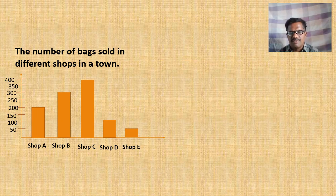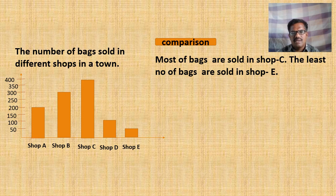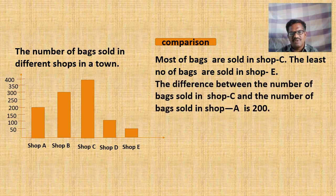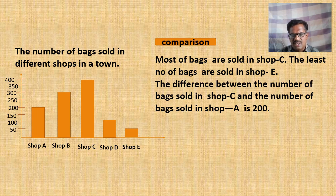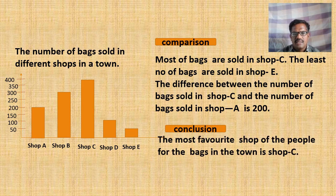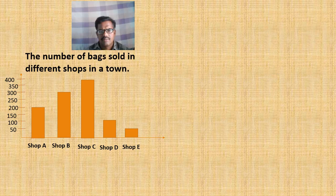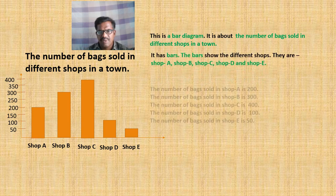Then the children may come out with another paragraph by taking comparisons among the values — giving the least number and the highest number. For example: 'Most of the bags are sold in Shop C. The least number of bags are sold in Shop E.' They can also write a paragraph taking differences among the values: 'The difference between the number of bags sold in Shop C and the number of bags sold in Shop E is 200.' Taking many differences, children may come out with many sentences. As a part of conclusion they may give their opinion: 'The most favorite shop of the people for bags in the town is Shop C.' If all the parts of the description are brought together, it may appear like this.